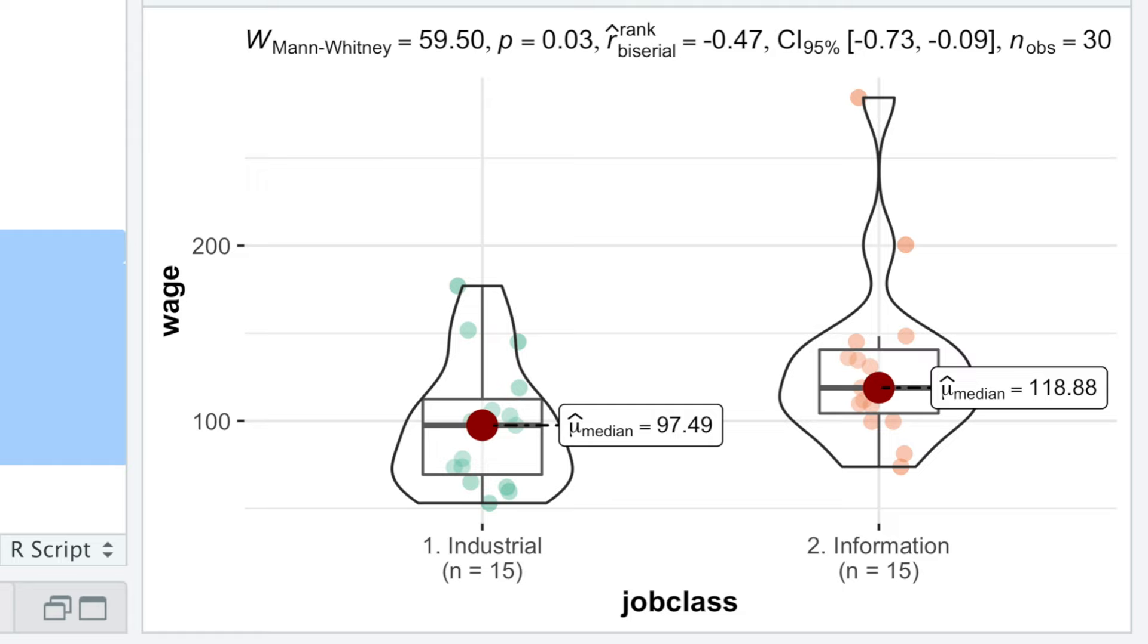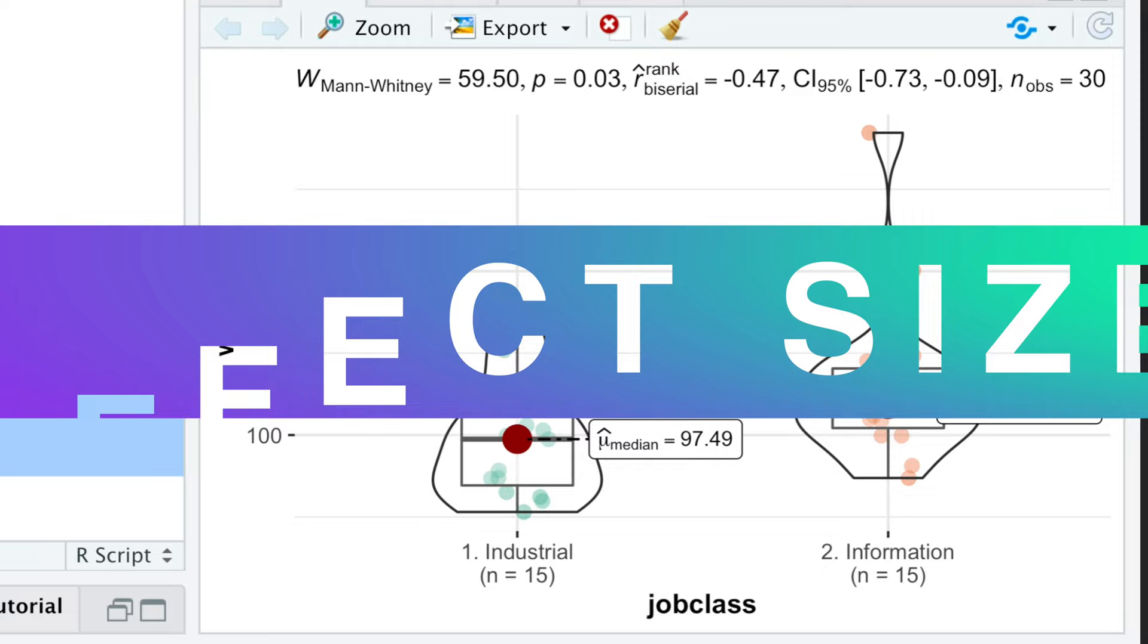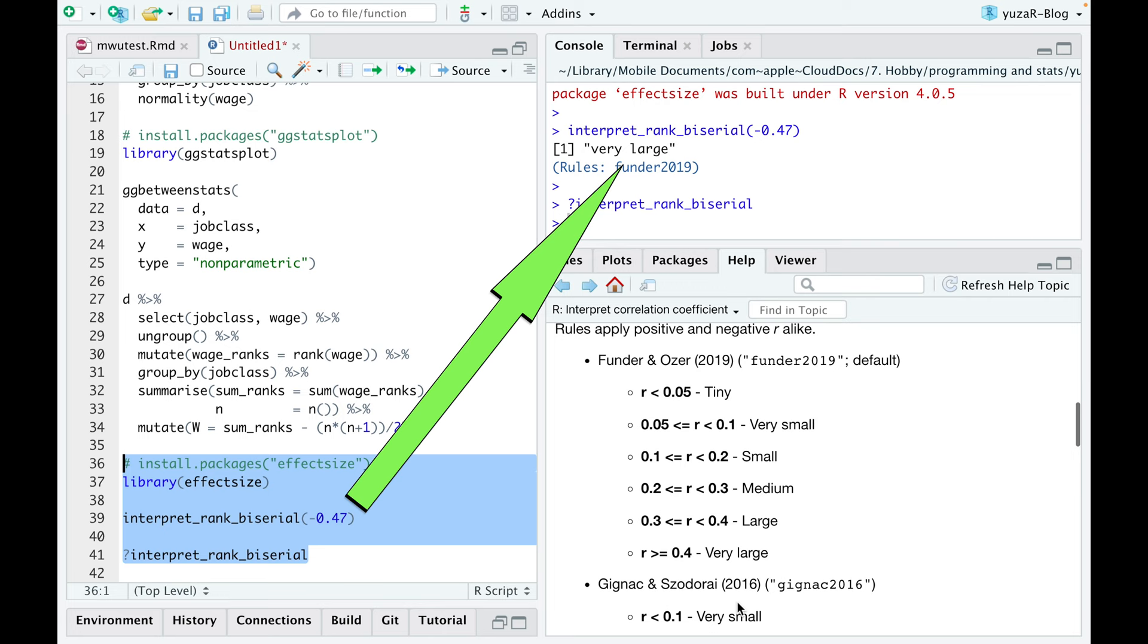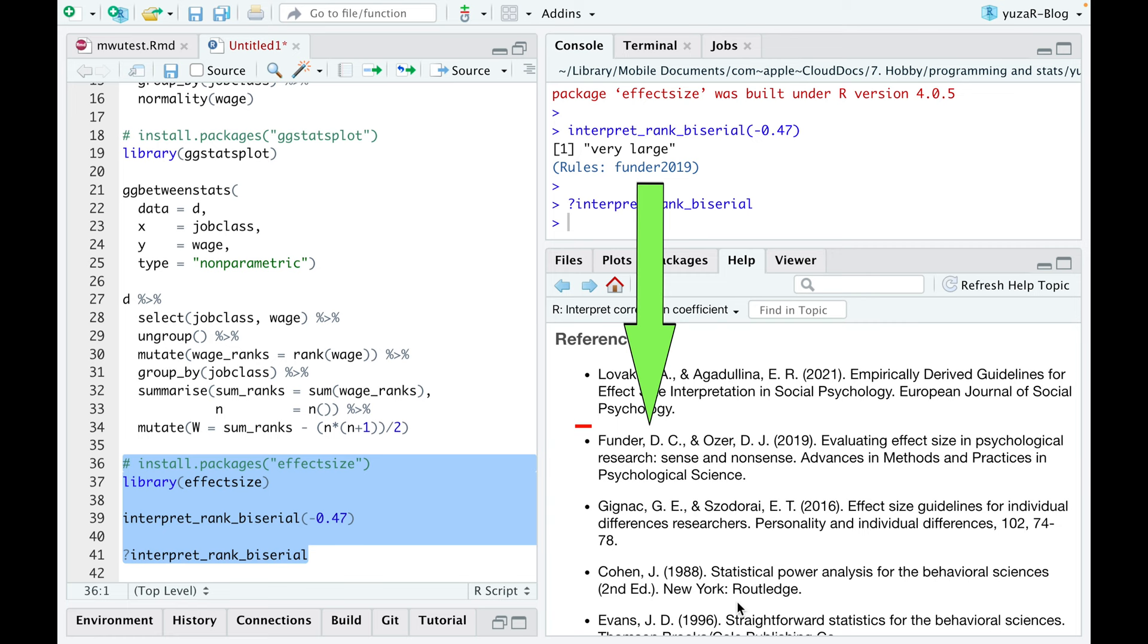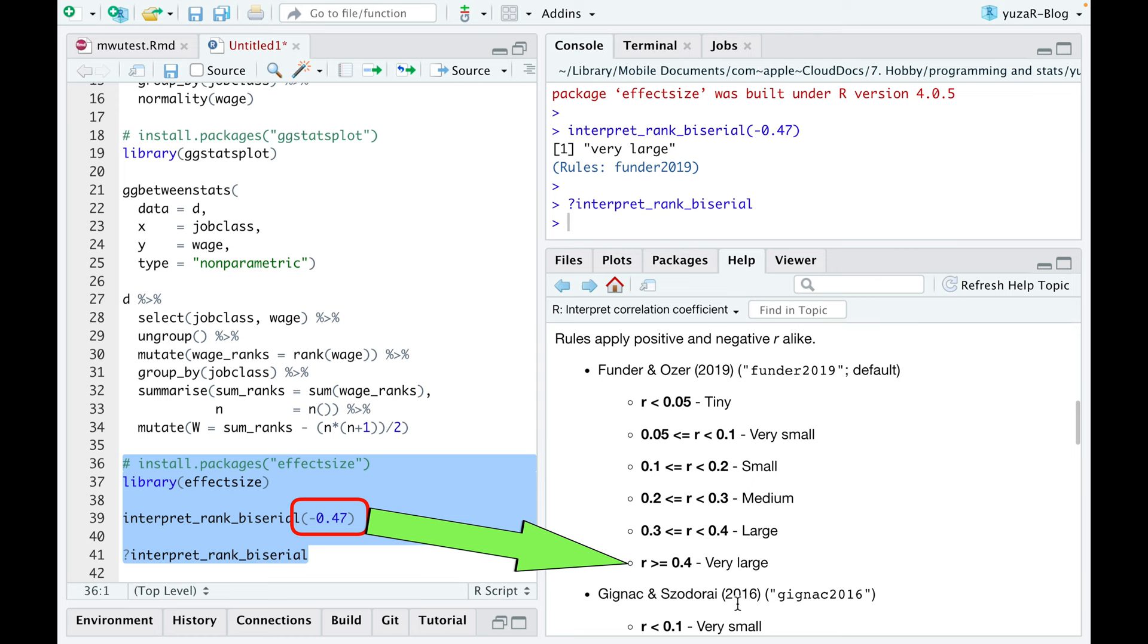Fortunately, ggBetweenStats provides a rank-biserial correlation coefficient with 95% confidence intervals as the measure of the effect size, which shows how large the difference is. The interpret rank-biserial function from effect-size package helps to interpret this effect size and even provides a reference. Our effect size of minus 0.47 indicates a very large difference in salaries between our groups.